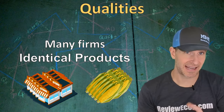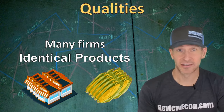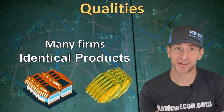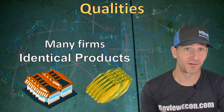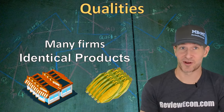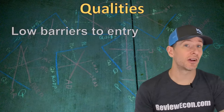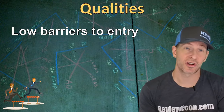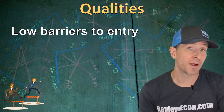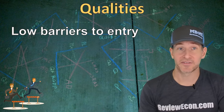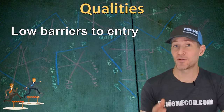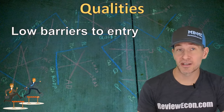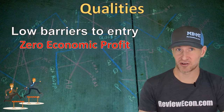Agricultural products are often used as examples of perfectly competitive markets — corn, for example. When it comes to purchasing corn, very few people are looking at the particular brand; one brand of corn is the same as another. We're also going to have very low barriers to entry. Barriers to entry are anything that make it difficult to start a business, and when there are low barriers to entry, it makes it easy for firms to enter or exit the market.